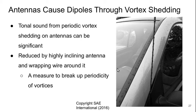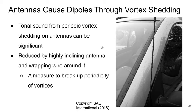Long antenna rods are not often seen on modern vehicles, though short ones still appear sometimes. These antennas can cause dipole noise sources through vortex shedding — producing tonal sound because of periodic vortex shedding, which can be a pretty significant noise source. You can reduce it by inclining the antenna and wrapping a wire around it, which is another measure to break up the periodicity of vortices. This is what you often see in modern vehicles.